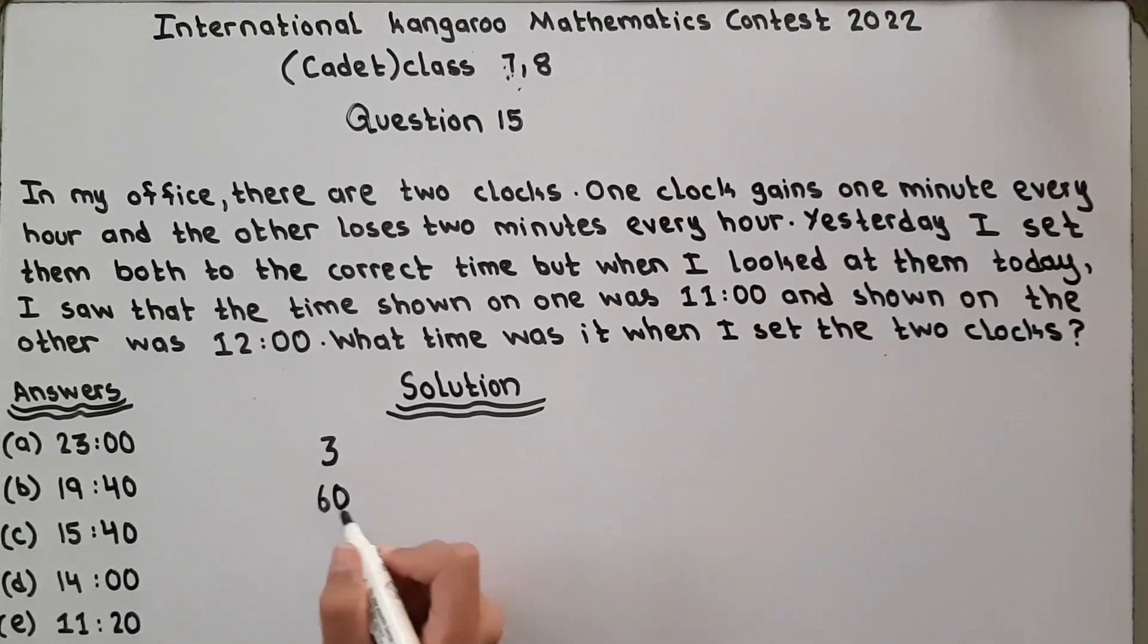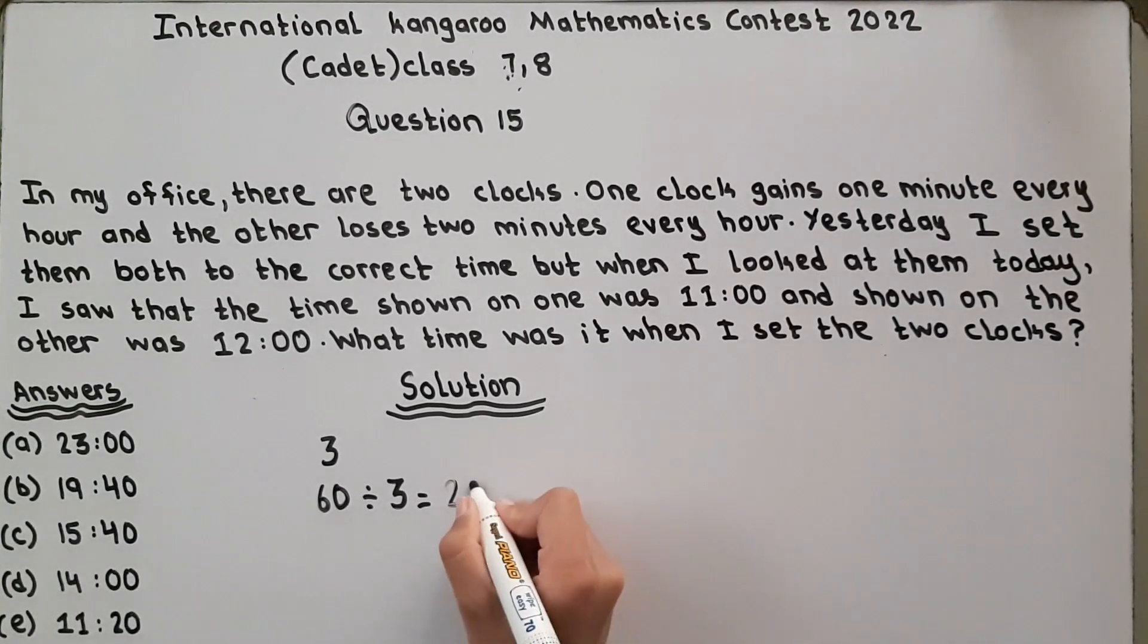So we will divide 60 by 3 to get the hours elapsed since the clocks were set. 60 divided by 3 equals 20 hours.